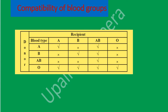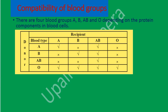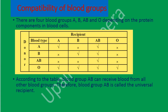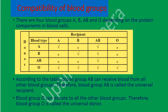Now we will find out about compatibility of blood groups. There are 4 blood groups — A, B, AB, and O — depending on the protein components in blood cells. According to the table, blood group AB can receive blood from all other blood groups; therefore, blood group AB is called the universal recipient. Blood group O can donate to all other blood groups; therefore, blood group O is called the universal donor.